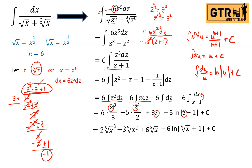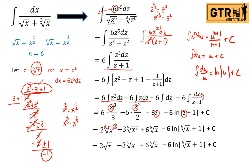Simplifying the exponents: sixth root of x cubed is x raised to three over six, which reduces to x to the one-half, or square root of x — so the first term is two square root of x. Sixth root of x squared is x raised to two over six, reducing to x to the one-third, or cube root of x — so the second term is minus three cube root of x. The final answer is two square root of x, minus three cube root of x, plus six times the sixth root of x, minus six ln|(sixth root of x) plus one|, plus C.